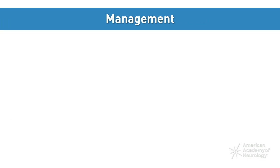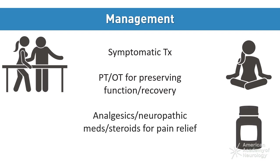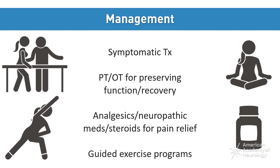Management is primarily symptomatic. Physical and occupational therapy can be helpful in compressive plexopathies. Early in the course of illness, when pain is the predominant symptom, analgesics and neuropathic pain medications may offer relief. A short course of corticosteroids may also be helpful. Physical and occupational therapy may help to preserve shoulder, arm, and hand functional capacity, but do not typically hasten recovery. A guided exercise program can help patients recover strength over time and avoid joint injury by encouraging use of proper form and resistance.